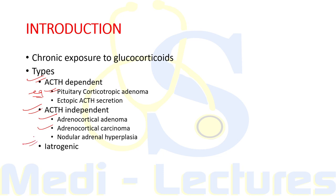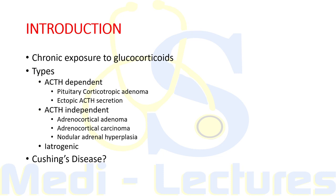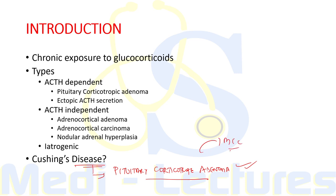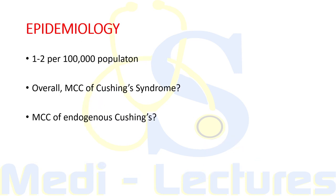Causes of ACTH independent Cushing syndrome include adrenocortical adenoma, adrenocortical carcinoma, and nodular adrenal hyperplasia. Finally, there can be iatrogenic Cushing syndrome due to administration of exogenous glucocorticoids to treat various inflammatory conditions. The term Cushing's disease is given specifically to Cushing syndrome caused by pituitary corticotrop adenoma, which is also the most common cause of endogenous Cushing syndrome.